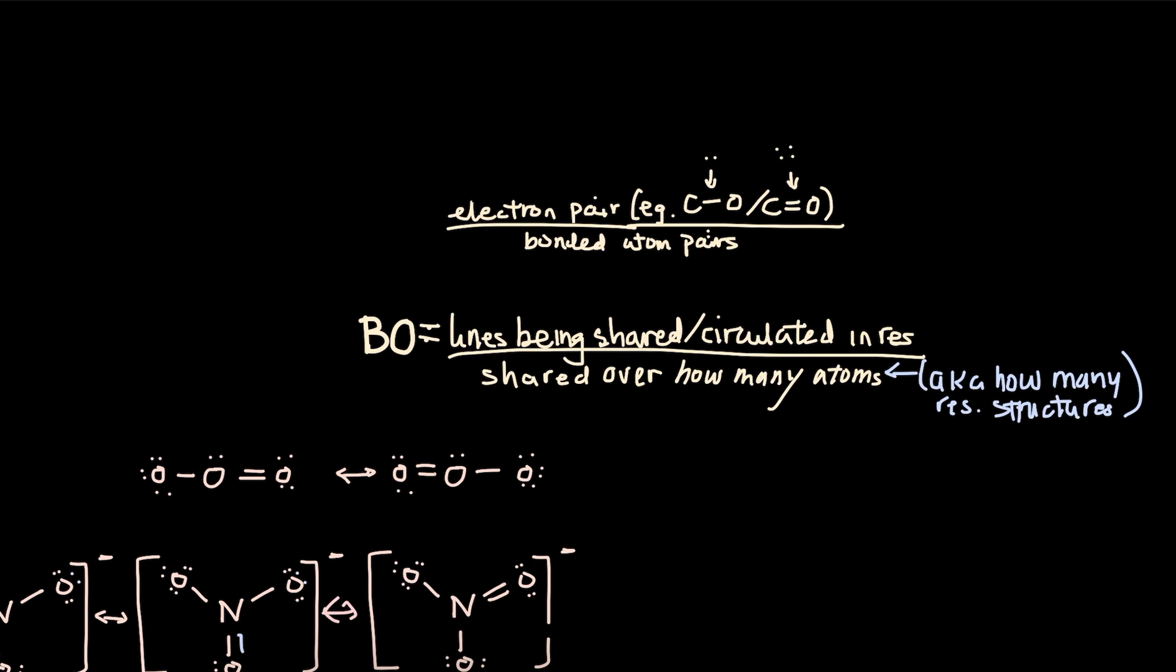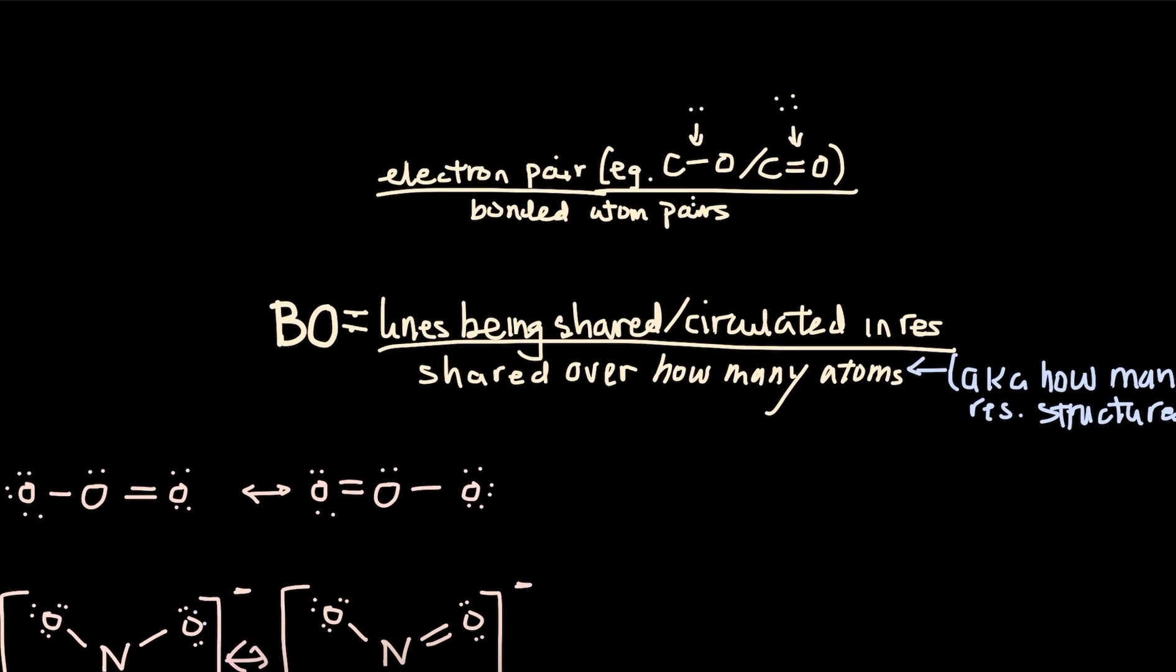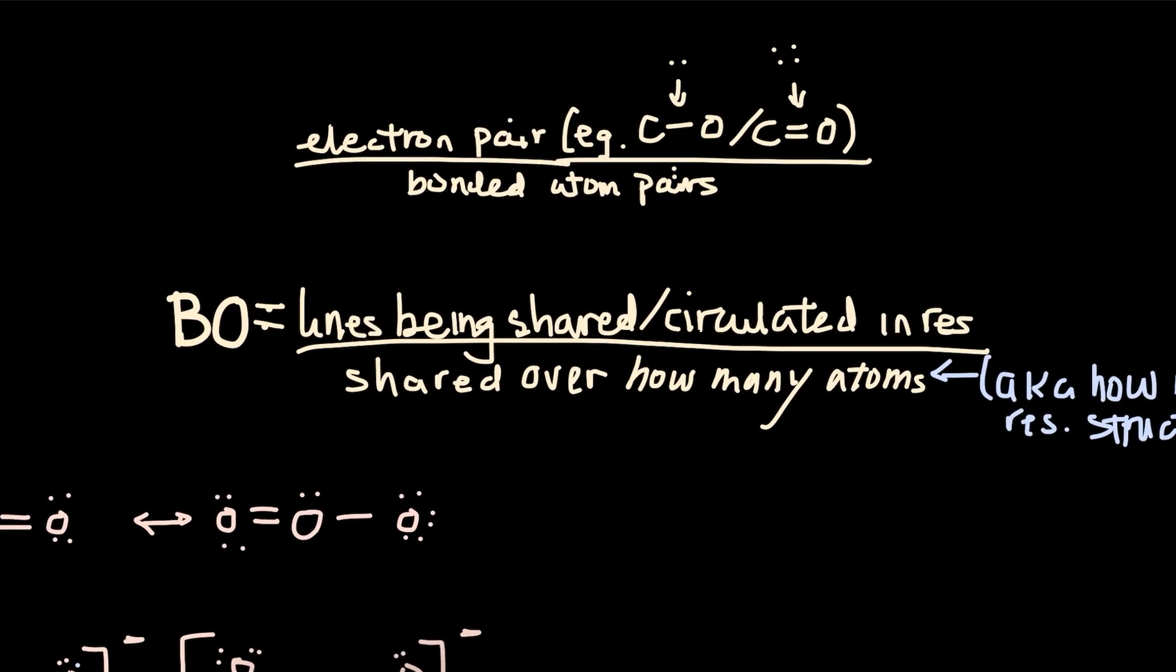So how do you calculate bond order more specifically according to VSEPR theory? Bond order in the VSEPR theory is different from the bond order in the molecular orbital theory.